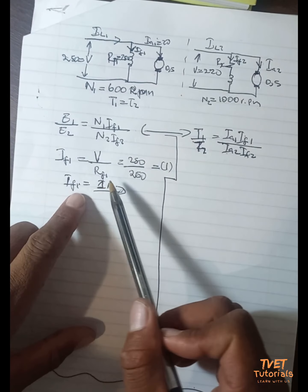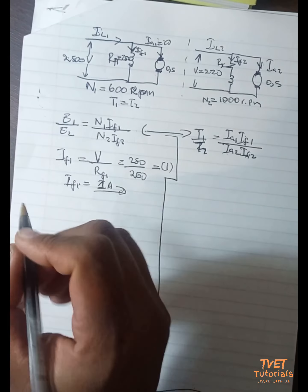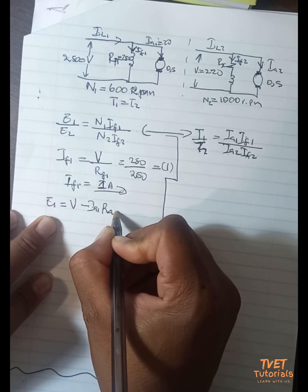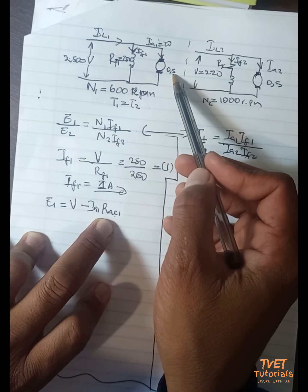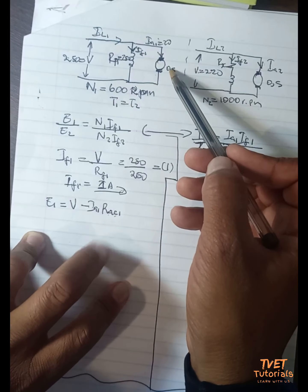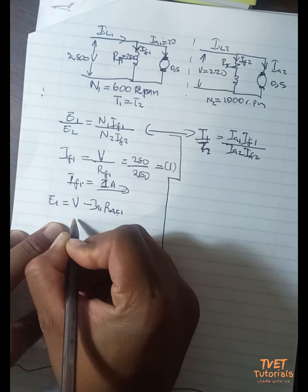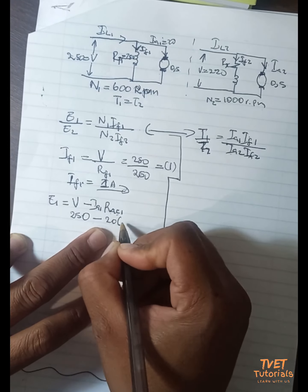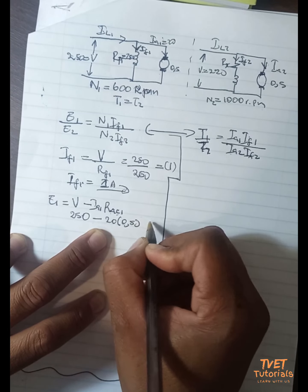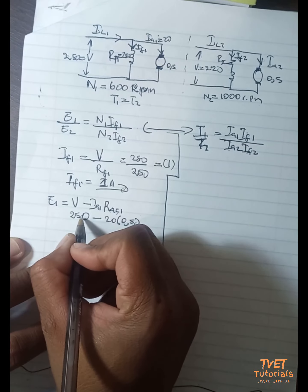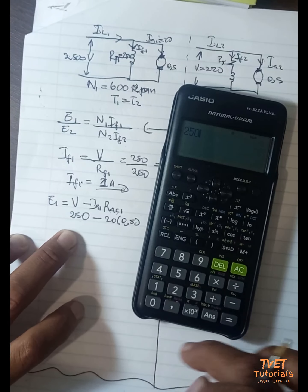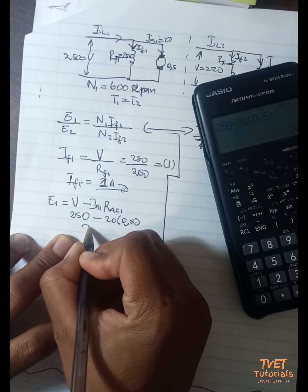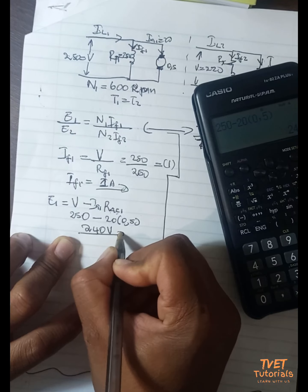We can also calculate E1. E1 equals V minus Ia1 multiplied by Rac1, where Rac is the armature circuit resistance. Substituting: E1 = 250 minus 20 times 0.5, which gives us E1 equals 240 volts.